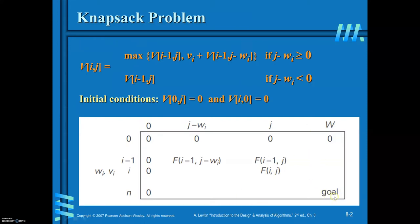Our objective is to find v[n][w], because you are given n items and the capacity of the sack is w. You are required to find v[n][w]. Whenever you need to find this, you also have to fill in all the intermediate values.